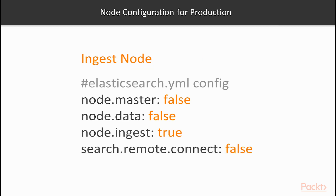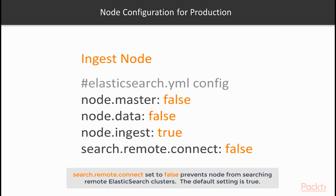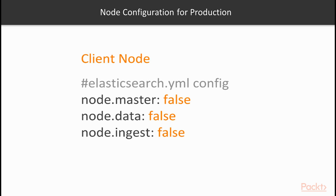If you wish to create a dedicated ingest node, set node.master and node.data to false, while setting node.ingest to true. Also, with the ingest node, you also need to set search.remote.connect to false. Finally, if you want to create a client node, you simply have to set all of node.master, node.data, and node.ingest to false on the node that you wish to be the client node.